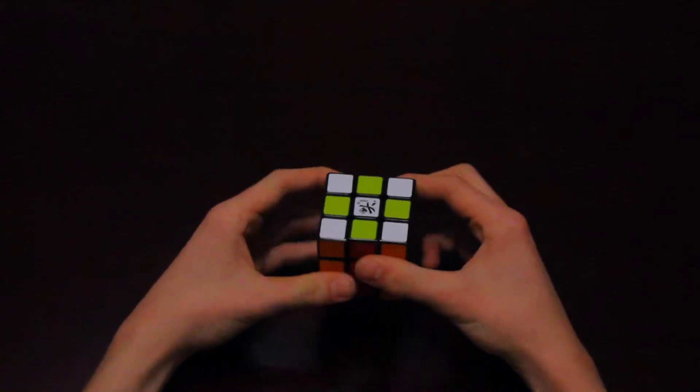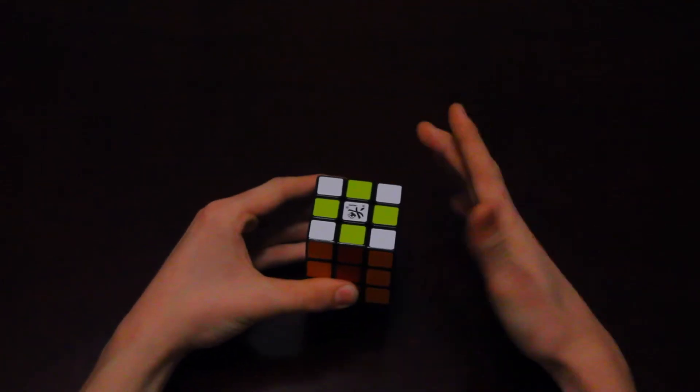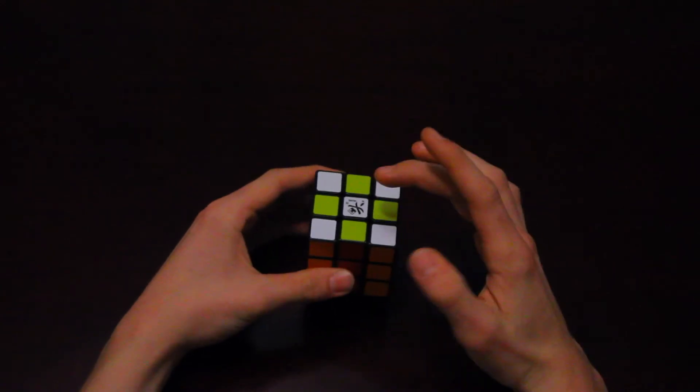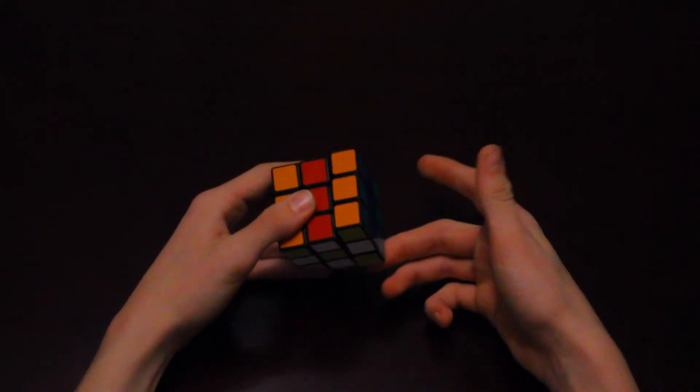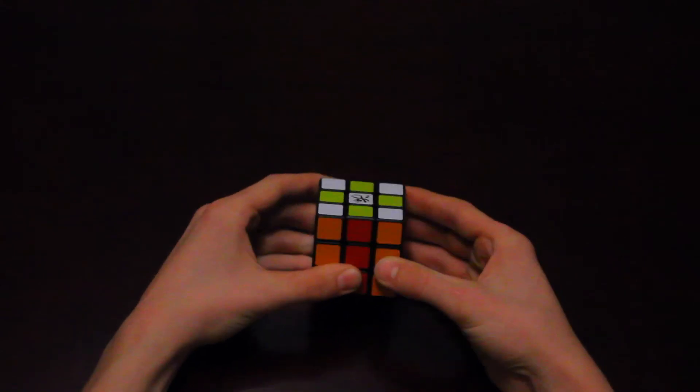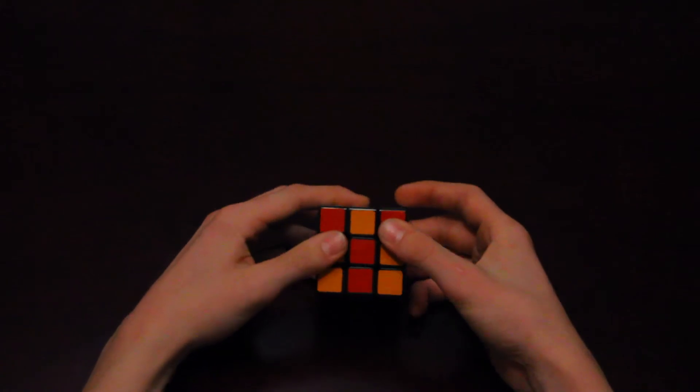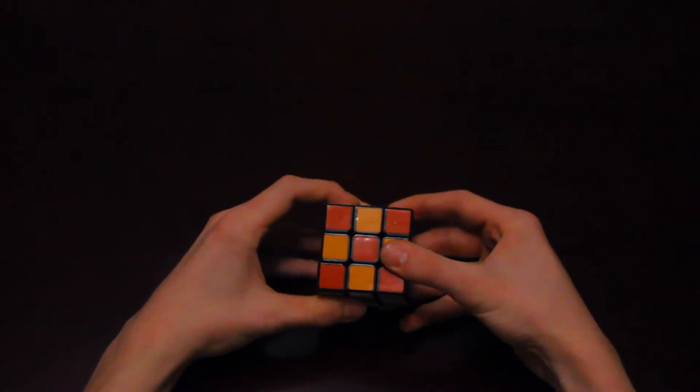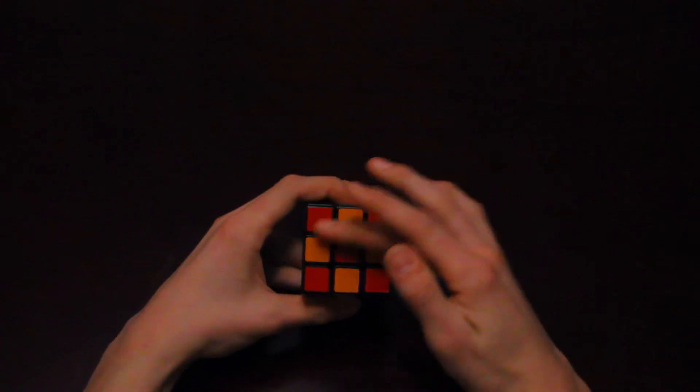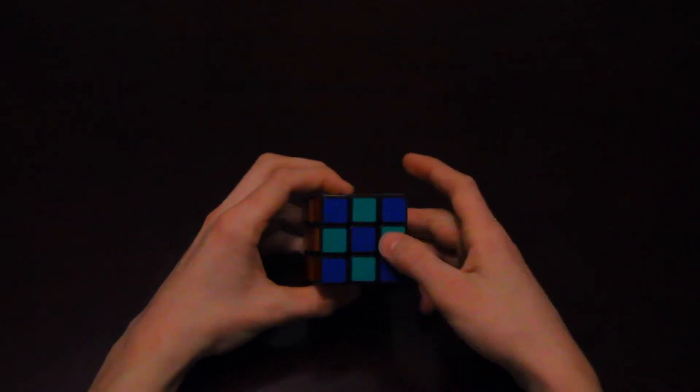So to do that, you just do the last pair of opposite 180 degree moves, which would be up 180 degrees and down 180 degrees. So let's start with that by doing up 180 degrees. That gets the first half there, and then down 180 degrees. So as you can see, that completed the checkerboard pattern on the rest of the sides.